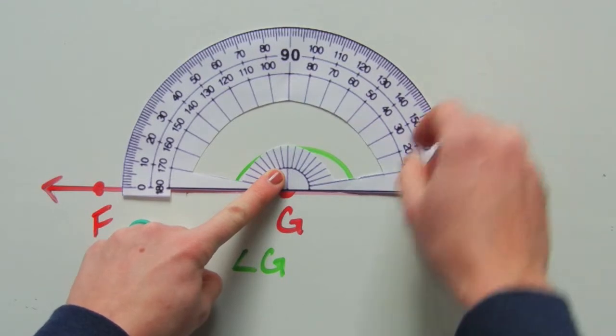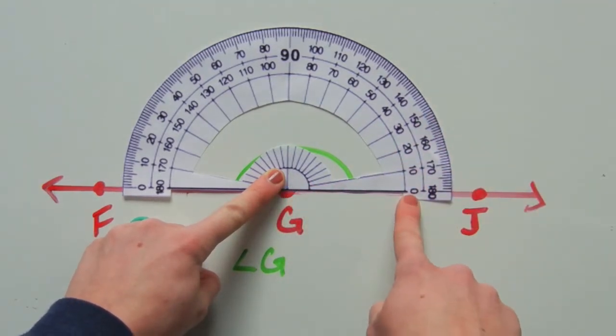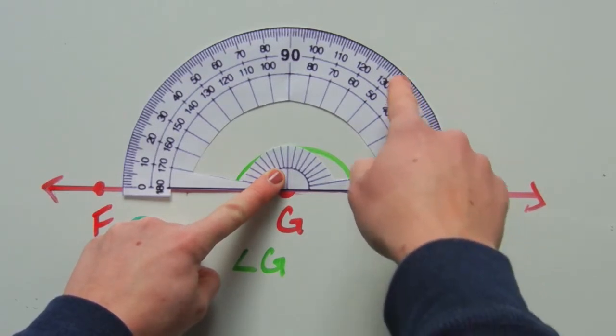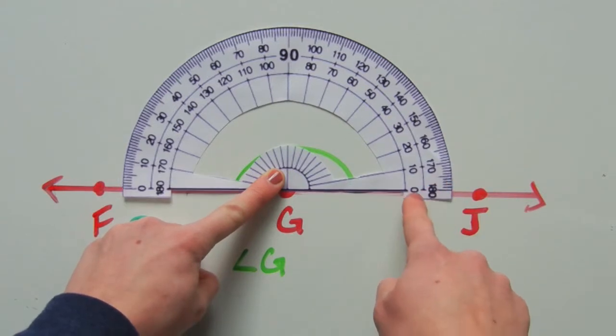And we line up our horizontal line that represents zero with the red line. And now we're going to go around until we reach F. And if you look at this, starting at zero...